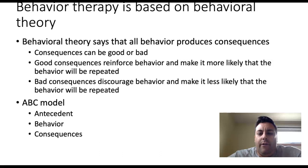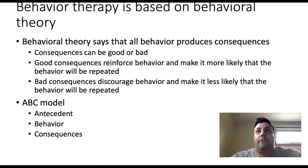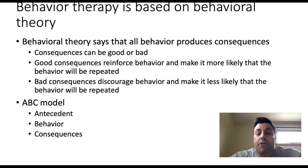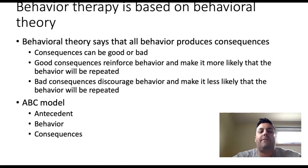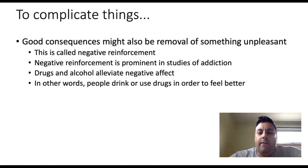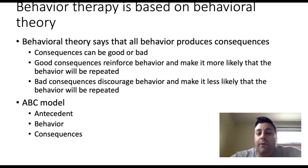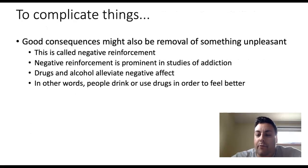These principles are found in studies of humans over and over again. We can praise children for doing things we want them to do, like having good manners or doing well in school. And we can punish children for doing something we don't want them to do — maybe cursing or fighting with a sibling. The essence really is that good consequences reinforce behavior and make it more likely to be repeated; bad consequences discourage behavior and make it less likely to be repeated.